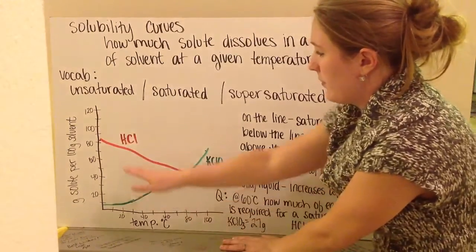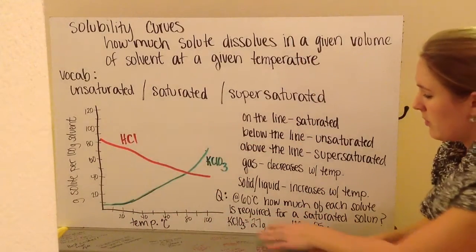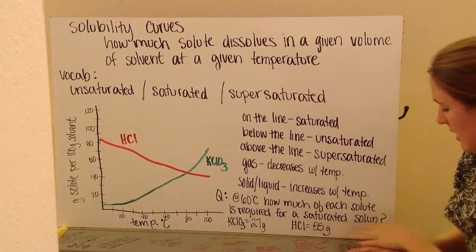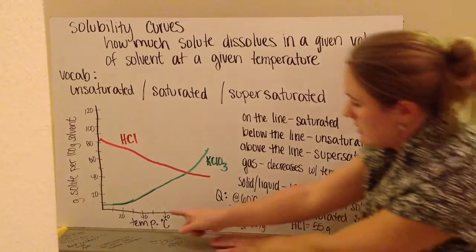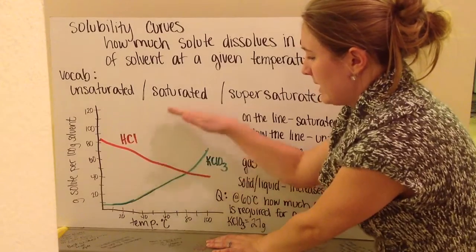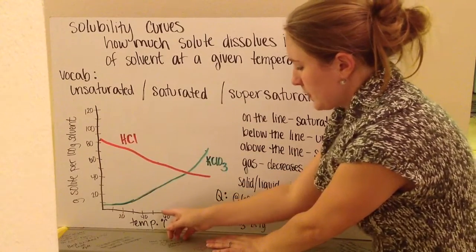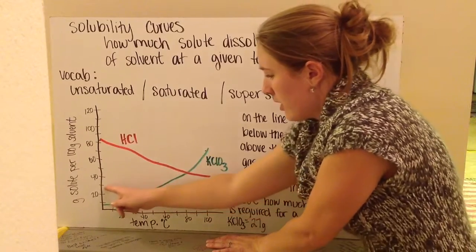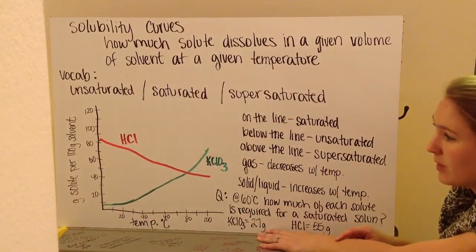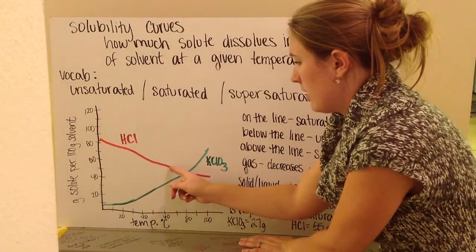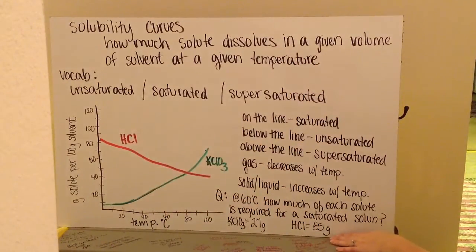For these graphs, I want to be able to read them. So, an example of reading them would be, well, at 60 degrees Celsius, how much of each solute is required for a saturated solution? So, that means at 60 degrees, I find 60 degrees and I go up, knowing that at my line it's saturated, above my line it's supersaturated, under my line it's unsaturated. At 60 degrees, I come up, I find that the line where it's saturated is at approximately, I pull it over, approximately 27 grams of solute per 100 grams of solvent. I go for my hydrochloric acid, up, so probably here, and over, and I find that it is approximately 55 grams is required per 100 grams of solvent.